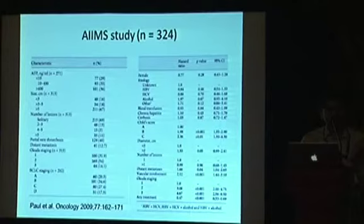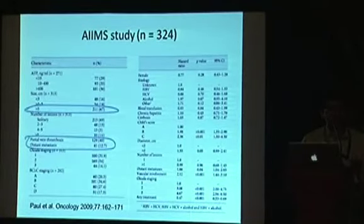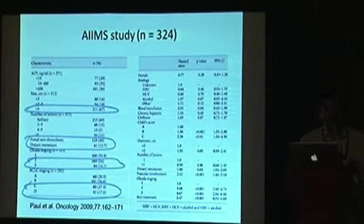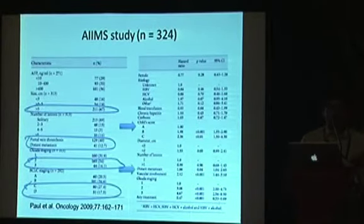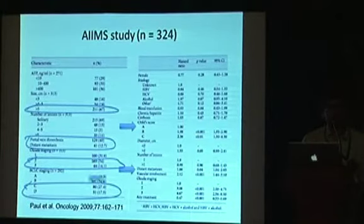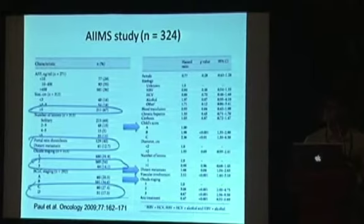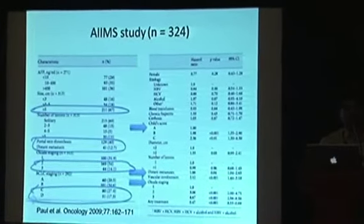In the AIMS study, patients were again mostly advanced — large tumors, portal vein thrombosis in 40%, and distant metastasis present. In Okuda and BCLC staging, a significant number of patients were in the higher stages. Child's criteria, vascular invasion, and distant metastasis were found to be significant, and the Okuda staging system was found to be good. This reflects the fact that most tumors in this group were advanced, which is why Okuda performed better.